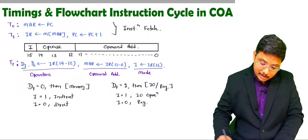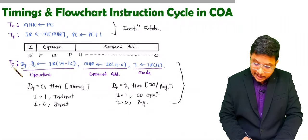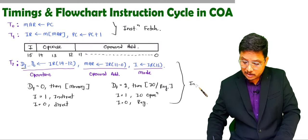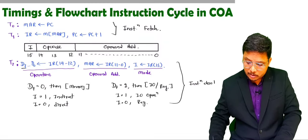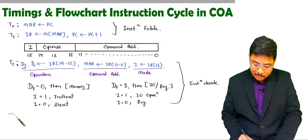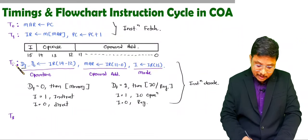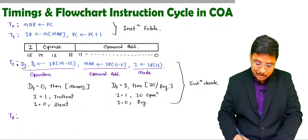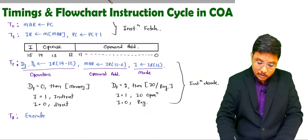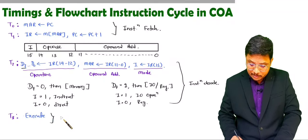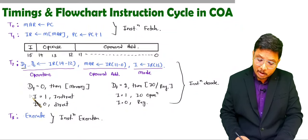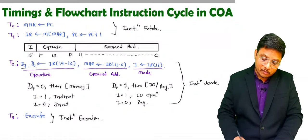In total, during T2 those many operations are happening — this is instruction decode. Now the third step is execute, which is very simple. Once you decode the instruction, after T2, in T3 we will be performing execution. Once you identify the operation, you just need to perform execute — in the third step you will be performing instruction execute. That is how the timings are there. Now we need to understand how the flowchart is structured.